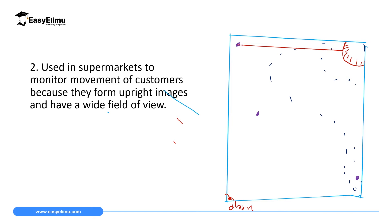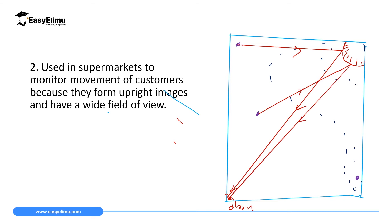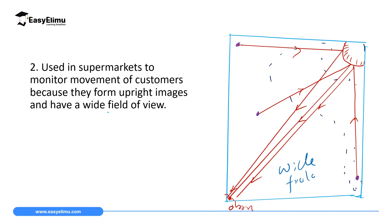Light from one person travels to the mirror and gets reflected to the observer. Light from another person also travels to the mirror and is reflected to the observer. Even from further away, light still moves to the mirror and gets reflected to the observer. This ability to observe objects over a very wide field is what makes convex mirrors useful as supermarket security mirrors, since they form upright images and have a wide field of view.